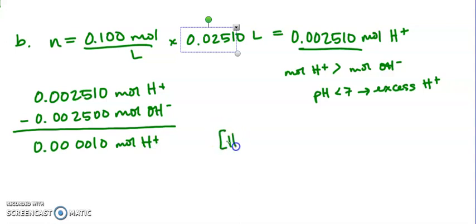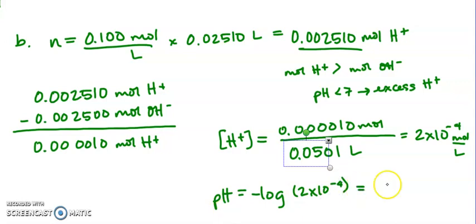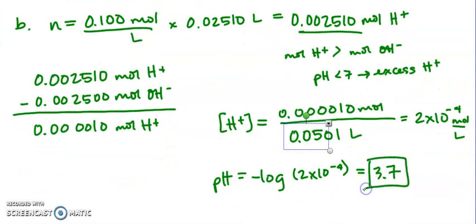So now we can find our concentration of H plus, which will be our moles over total volume. So this gives me a value of 2 times 10 to the negative 4th moles per liter. So my pH is negative log of 2 times 10 to the negative 4th. So my pH is 3.7, which makes sense because we have more H plus. So this is more acidic. So here would be my answer for part B.